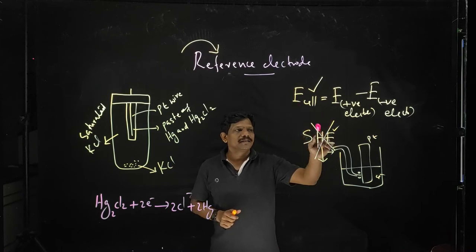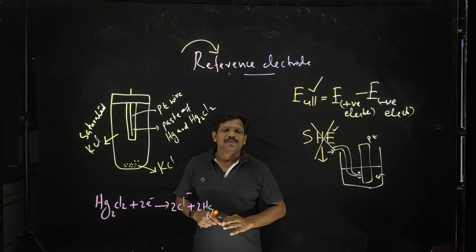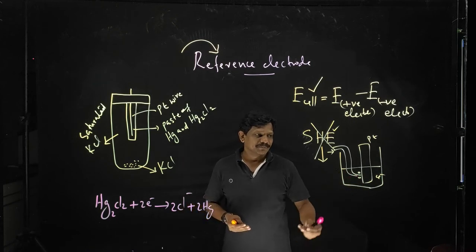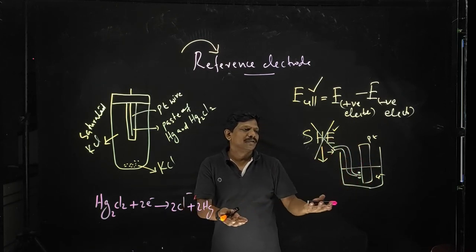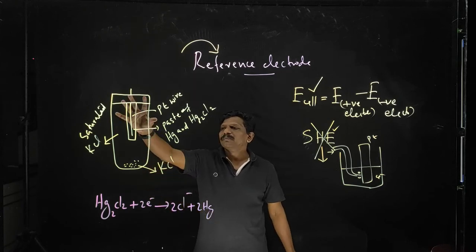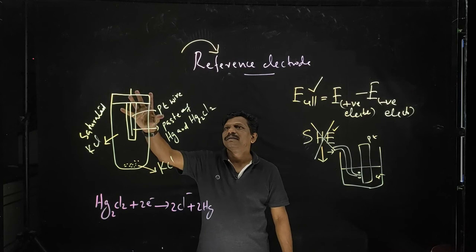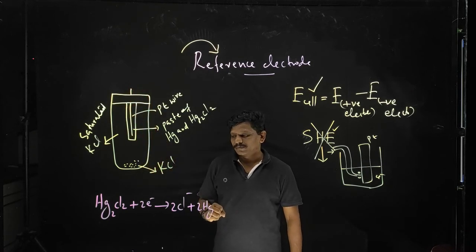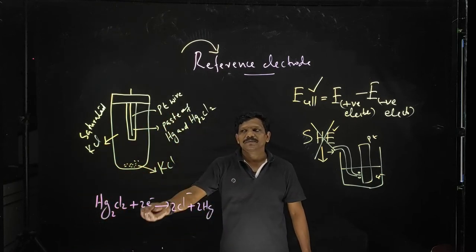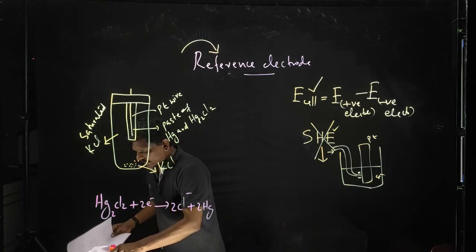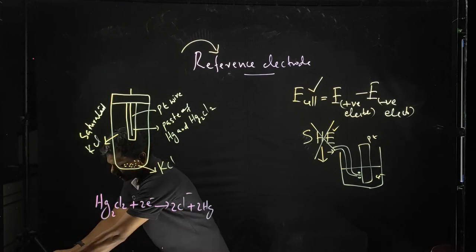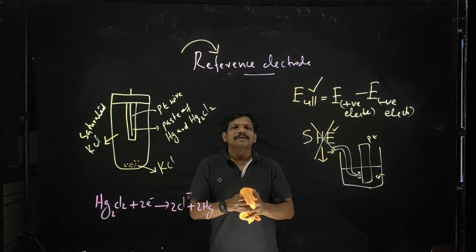Practically, we are not using the standard hydrogen electrode for our purposes because it is not convenient — it is not mobile, and many inconveniences are there. That is why we are using secondary reference electrodes like the calomel electrode. This is using as a reference electrode. I will tell you about different types of electrodes that can be used for the measurement of pH.